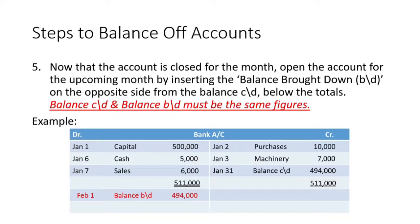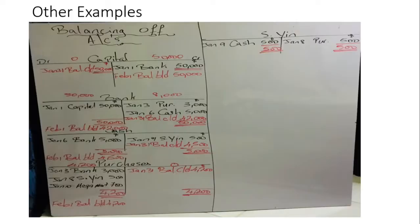Please note that the balance carried down and balance brought down must be the same figures. If you close off the last period with $494,000 in your bank account, that same balance carries into the next month. Always remember: if you have a balance carried down, you must have a balance brought down.